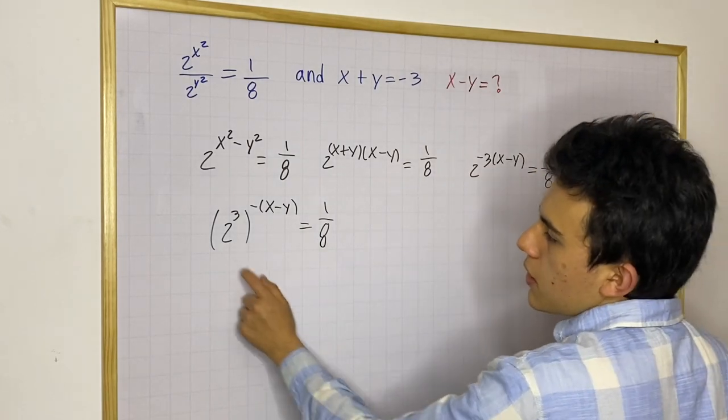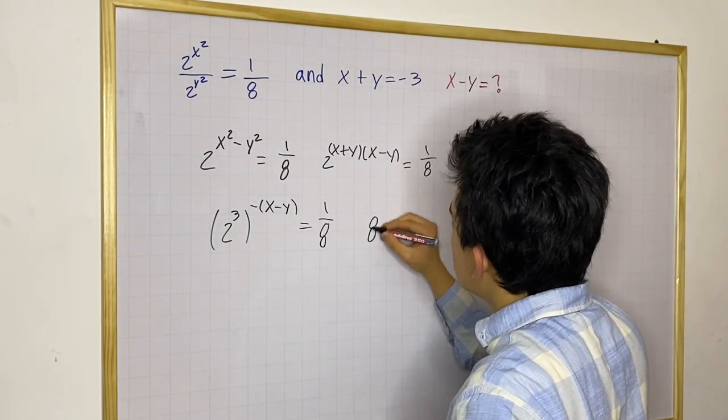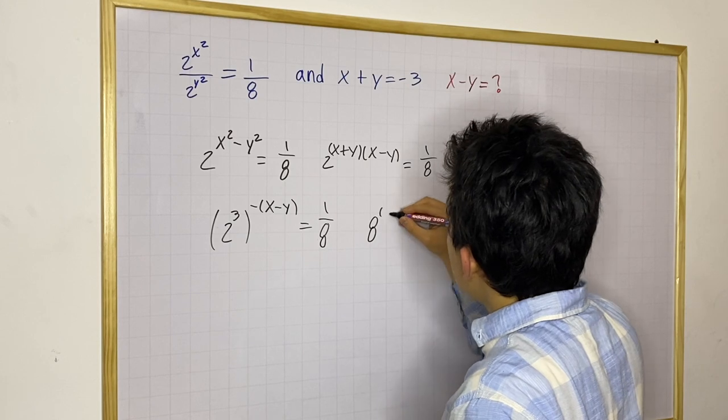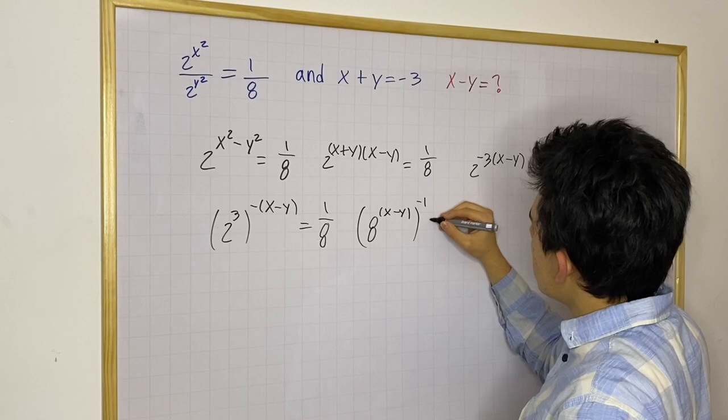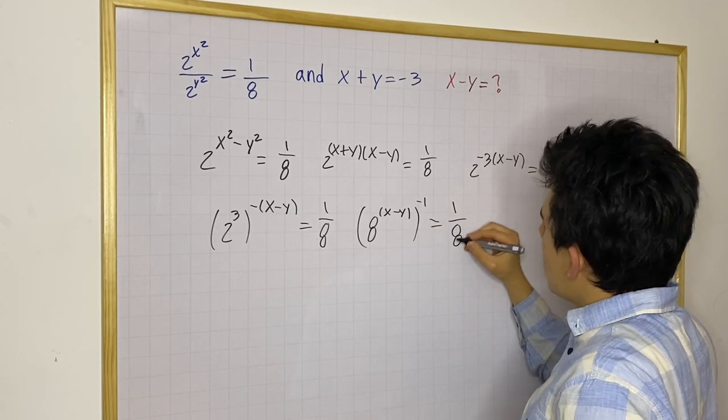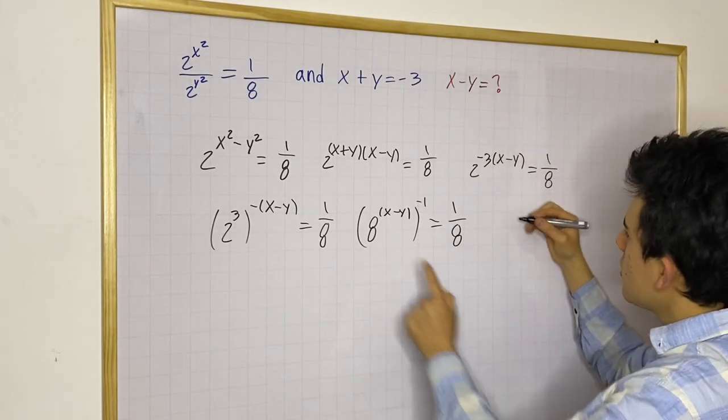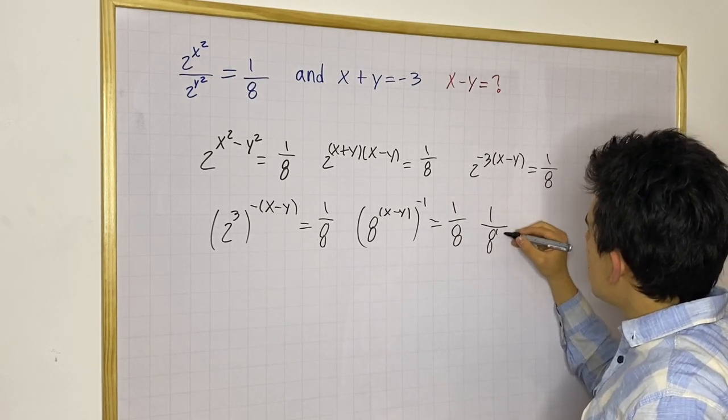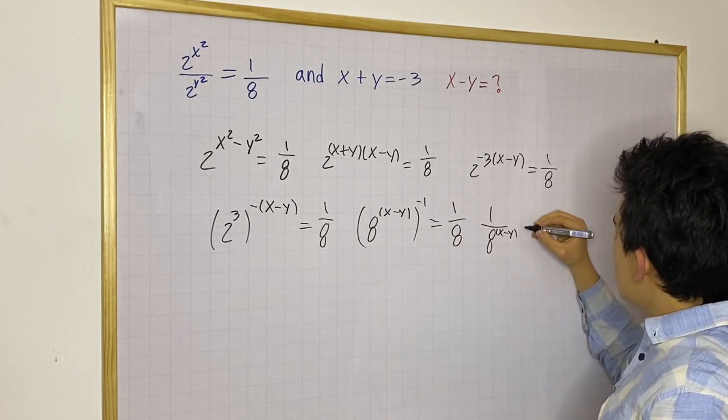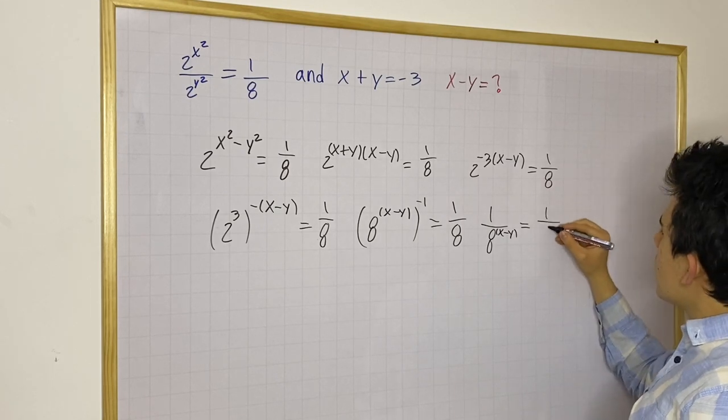And now, what can we do here? Well, we know this is going to be 8. And this is going to be 8 to the x minus y power, and all of these to the negative 1. Now, we can switch this fraction, and we will get 1 over 8 to the x minus y is the same as 1 over 8.